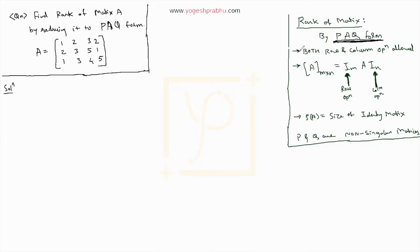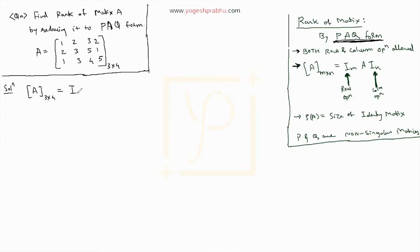The first point says that both row and column operations are allowed. Then you will write down the matrix A, which has M rows and L columns. In our case we have three rows and four columns. It is written as I_M A I_N. Since A is a 3×4 matrix, it will be written as I₃ A I₄.